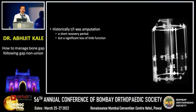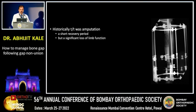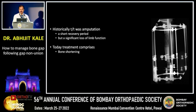The incidence in some series has been reported to be as high as 2.5%. Historically, the treatment for gap non-union was amputation — that was three decades back. The advantages were a short recovery period but a significant loss of limb function. Today, amputation is out of the question.